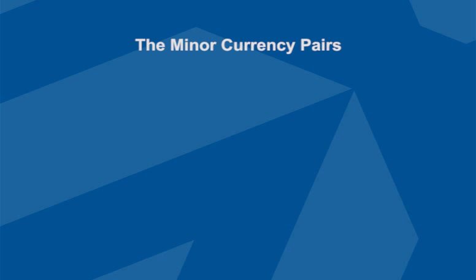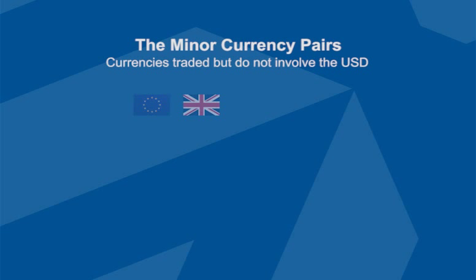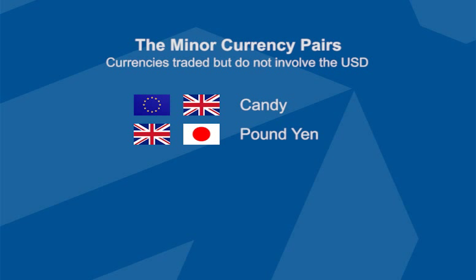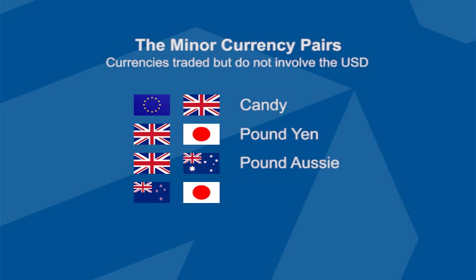There are also minor currency pairs, which basically don't involve the US Dollar. These include the Euro/GBP nicknamed the Candy, the GBP/Yen nicknamed the Pound Yen, the GBP/Australian Dollar nicknamed the Pound Aussie, the New Zealand Dollar/Japanese Yen called the Kiwi Yen, and the Australian Dollar/New Zealand Dollar nicknamed the Aussie Kiwi.